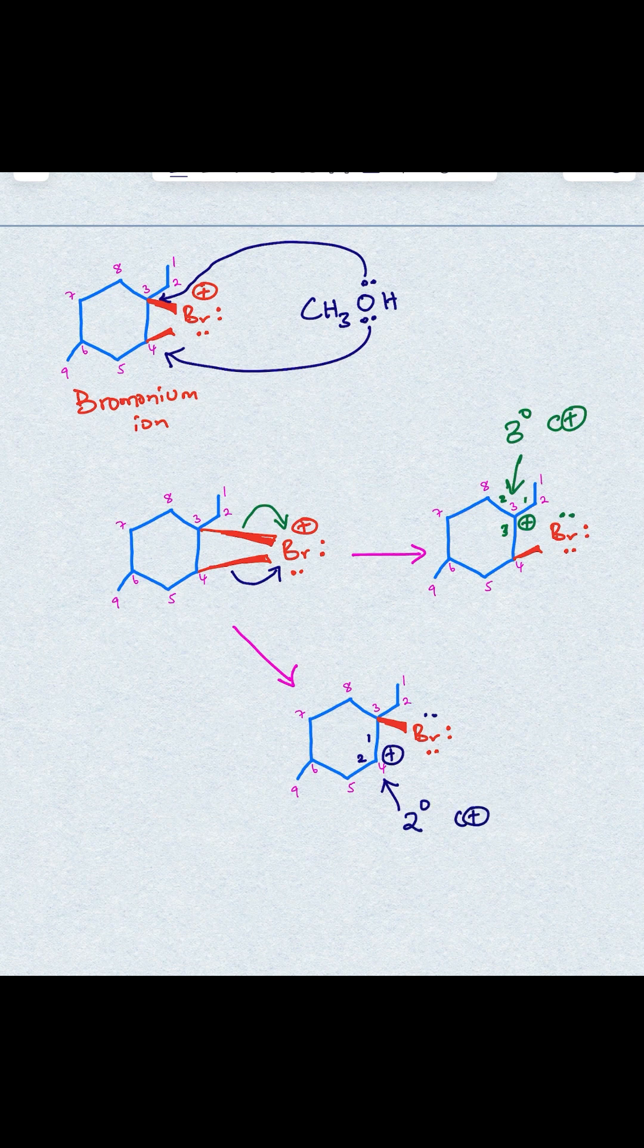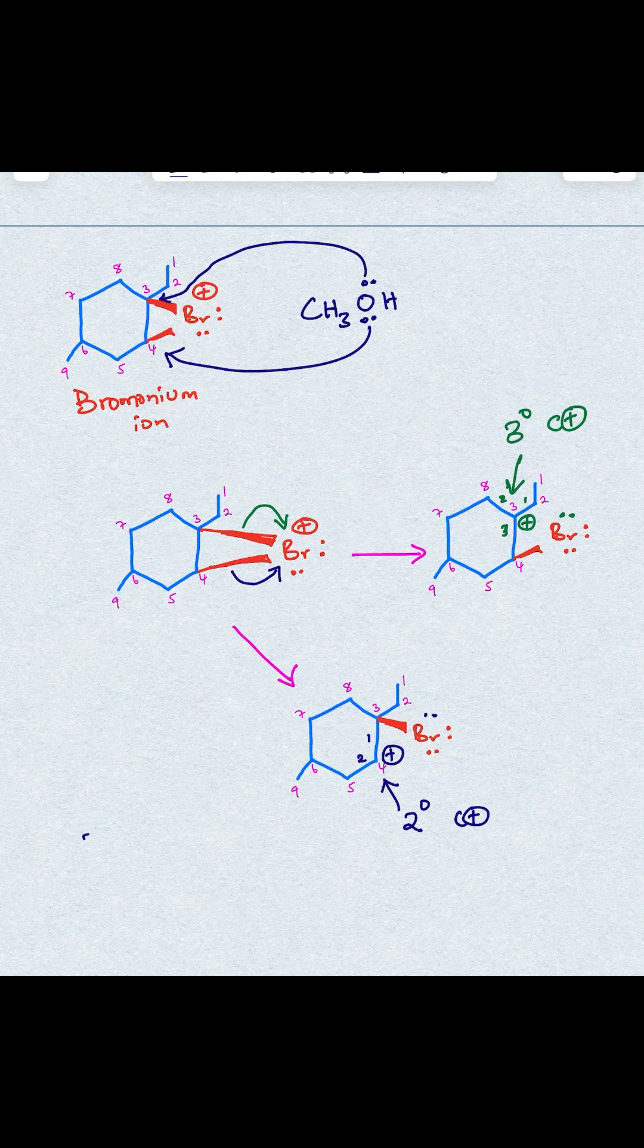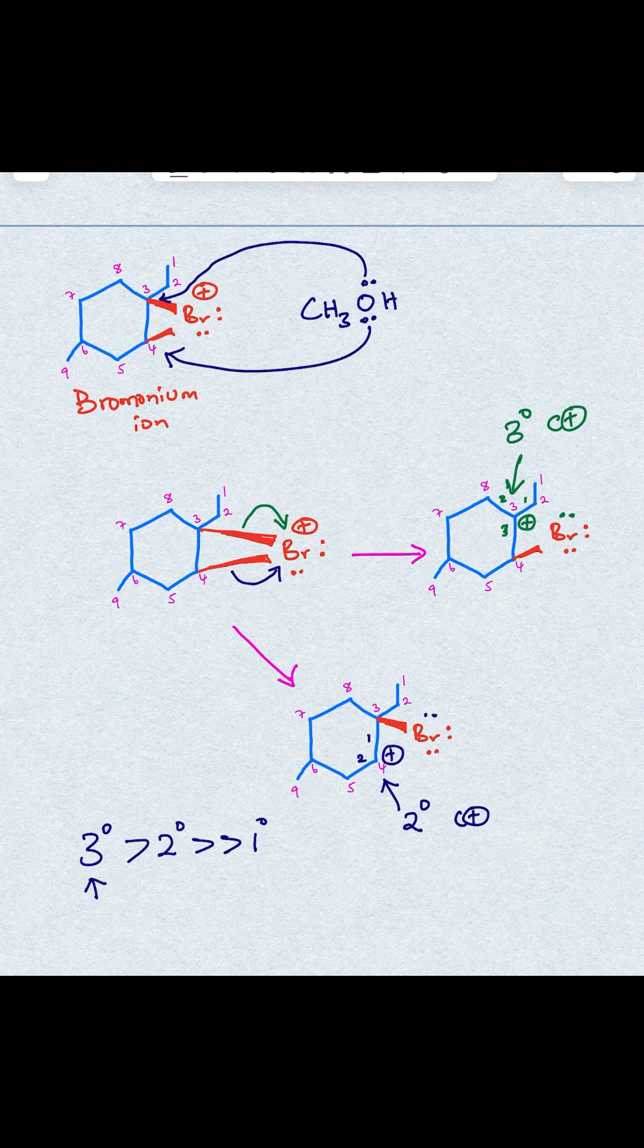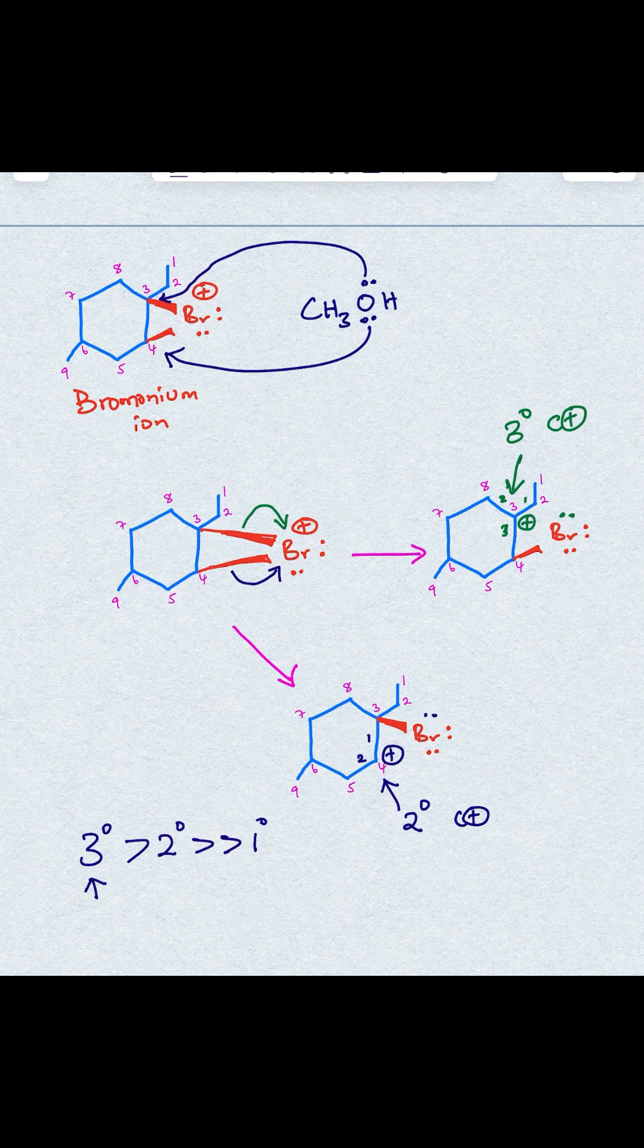Now we're basically comparing tertiary carbocation and secondary carbocation. Tertiary carbocation is more stable than secondary carbocation, which is much more stable than primary carbocation, and the reason for that is that tertiary carbocation has 3 alkyl groups that contributes electron density towards the carbocation center, and therefore helps stabilize the carbocation, and it does that through hyperconjugation.